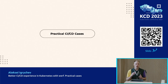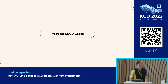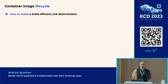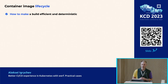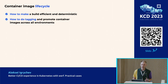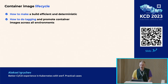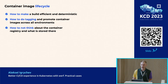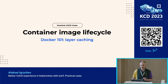The introduction is over and we can move forward to the central part of the presentation. I would like to talk about the practical CI/CD cases and highlight some interesting Werf features. The first part is about the container image life cycle: how to make a build efficient and deterministic, container layer caching management, how to do tagging and promote container images across all environments, and how to not think about the container registry and what is stored there — our container registry cleanup approach.